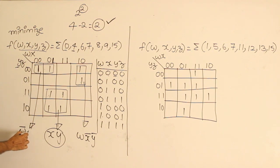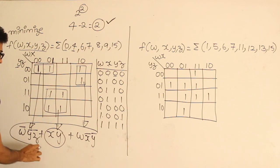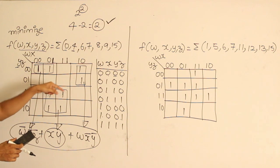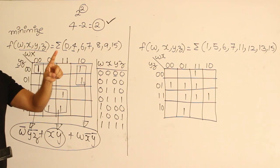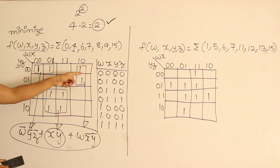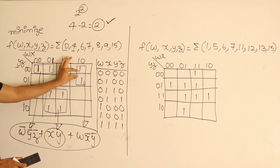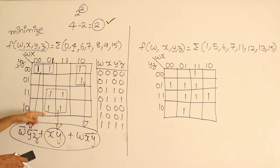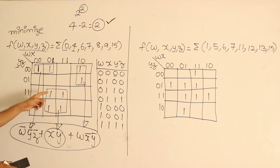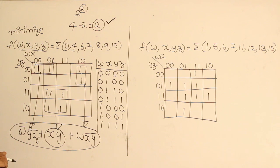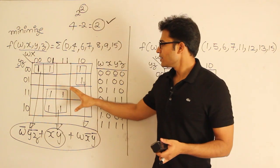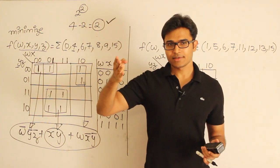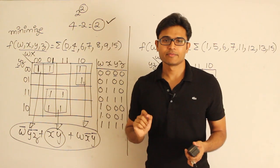We got three product terms because we have three subcubes. Each subcube has size 2, so we can drop only one variable from the four. For the size-4 subcube, we drop two variables and get a 2-variable term. That is how we get it. The minimal expression is one where you cover all 1s using as few subcubes as possible and as large subcubes as possible. With more examples, these concepts will become clear.